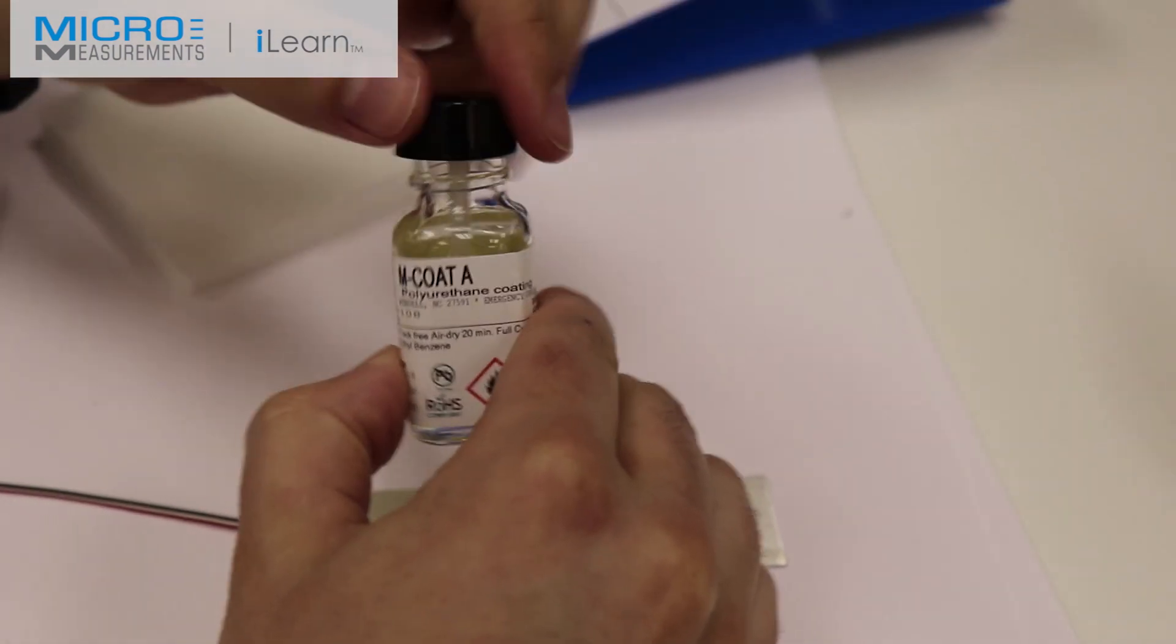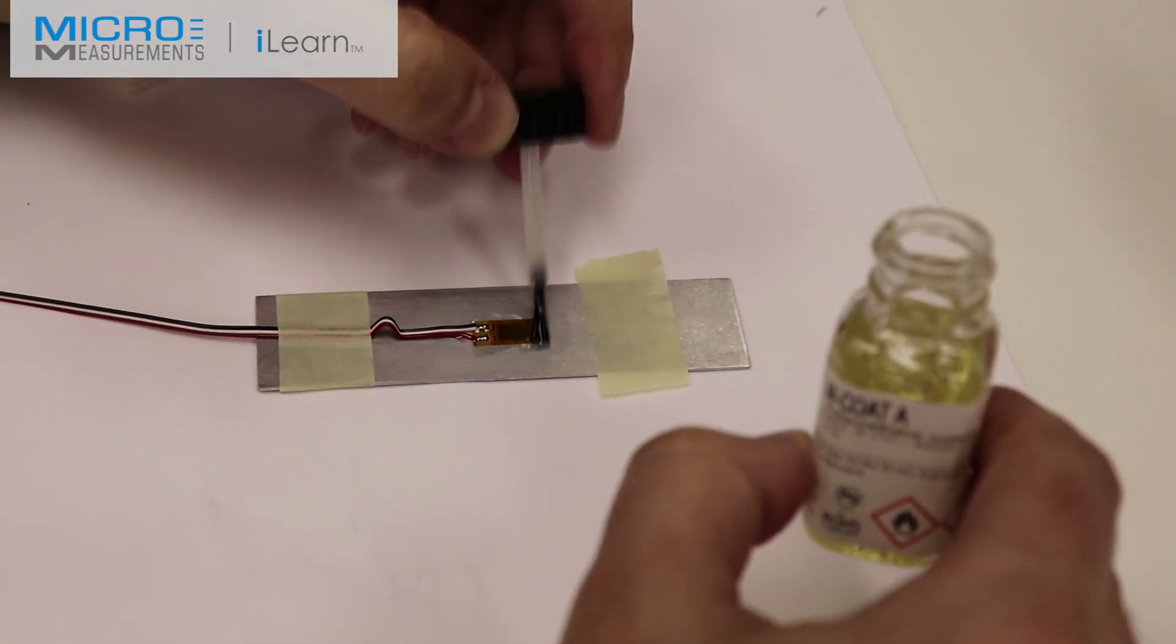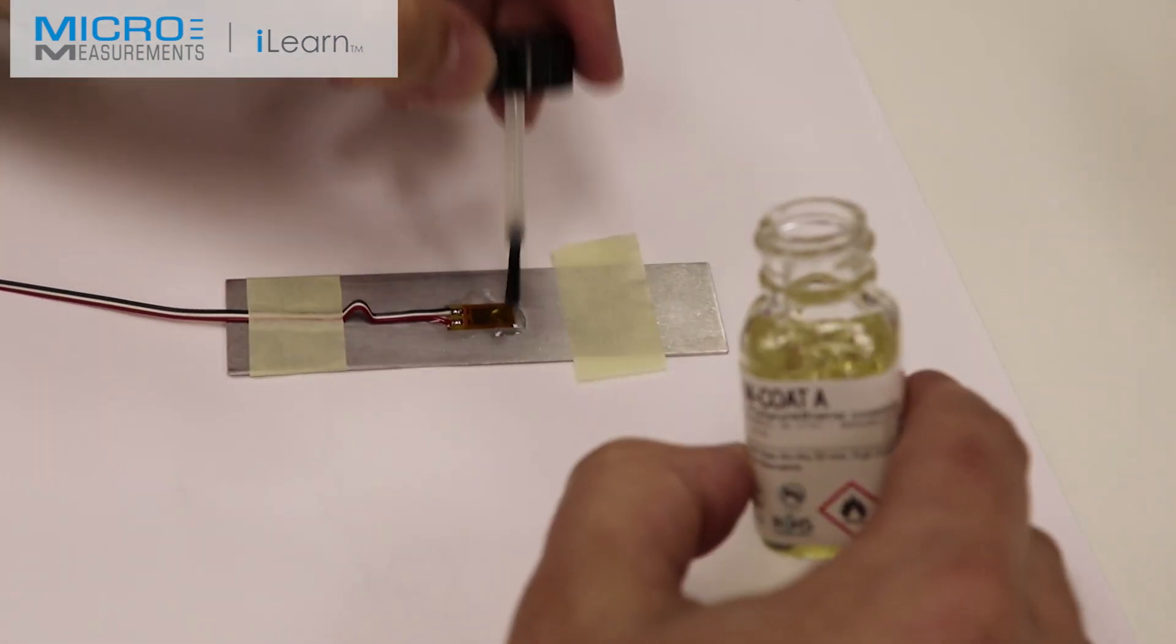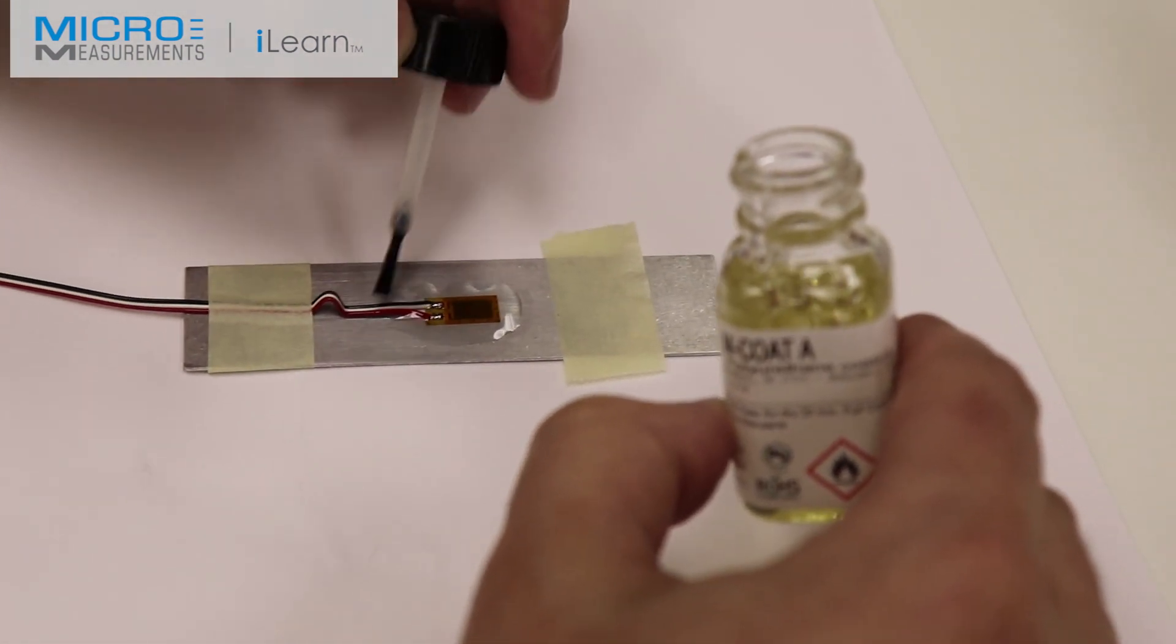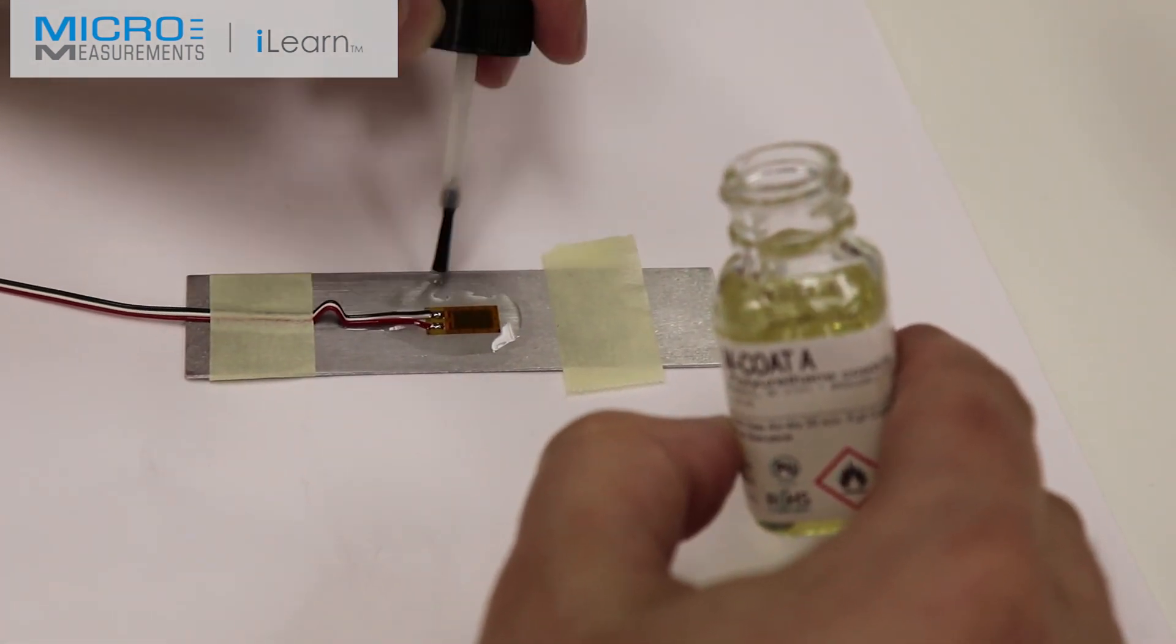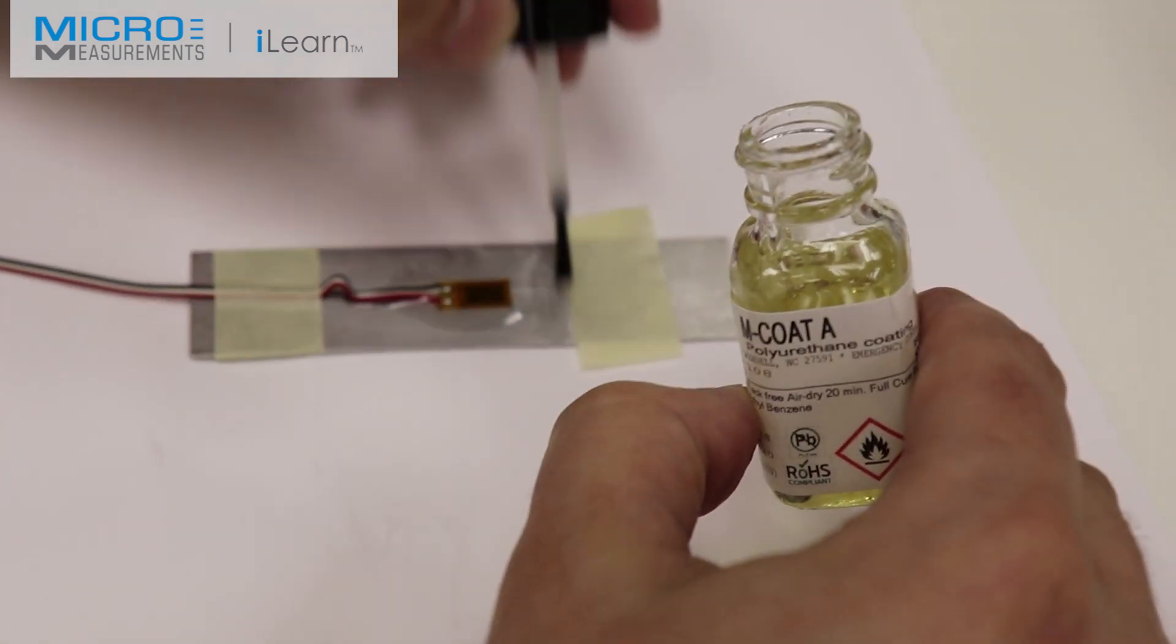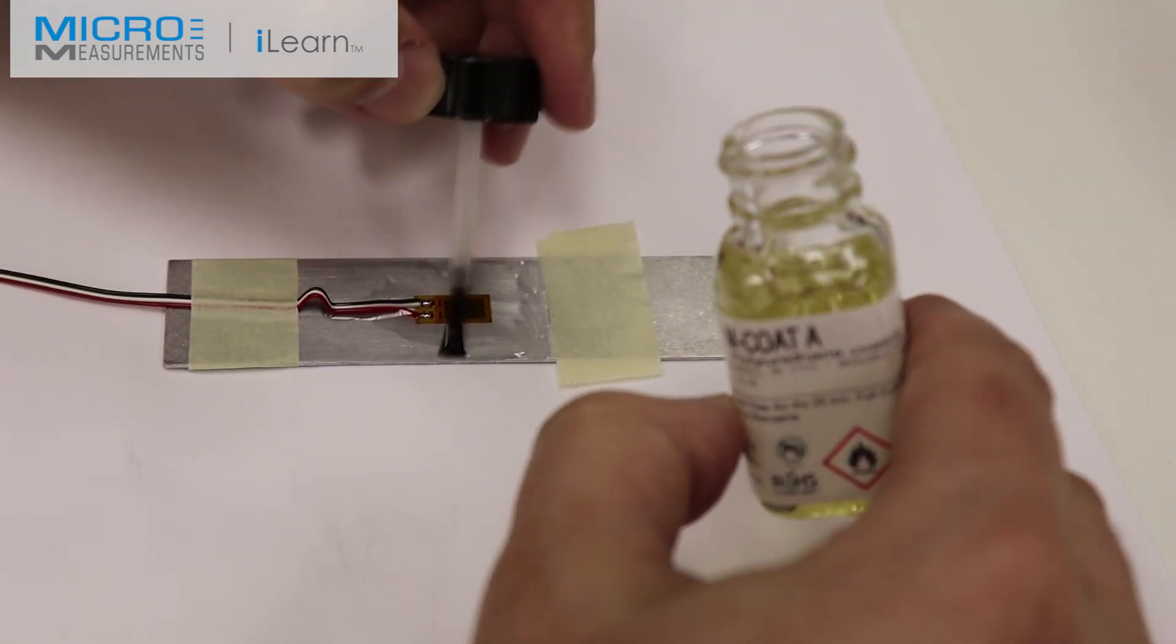So he's now going to flood the surface with the M-Coat A, remembering that it's an environmental protection, not a show car finish that he's looking for. Making sure to work in and around all those solder junctions and up underneath the lead wire, he's going to completely cover the area between the two pieces of tape.